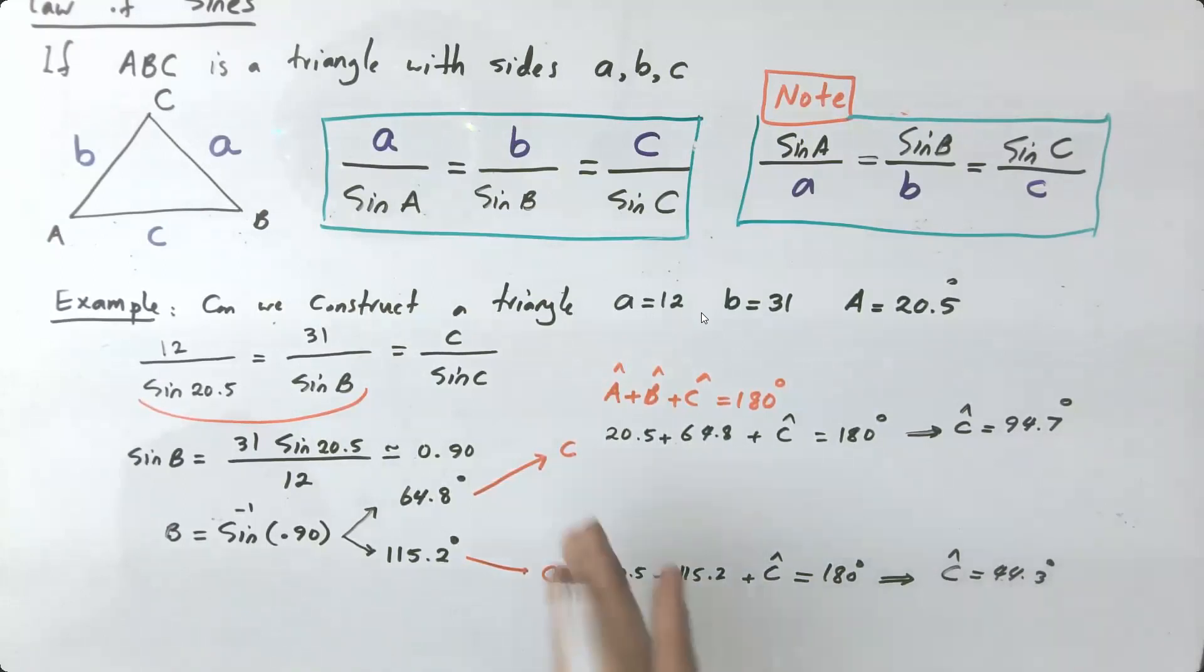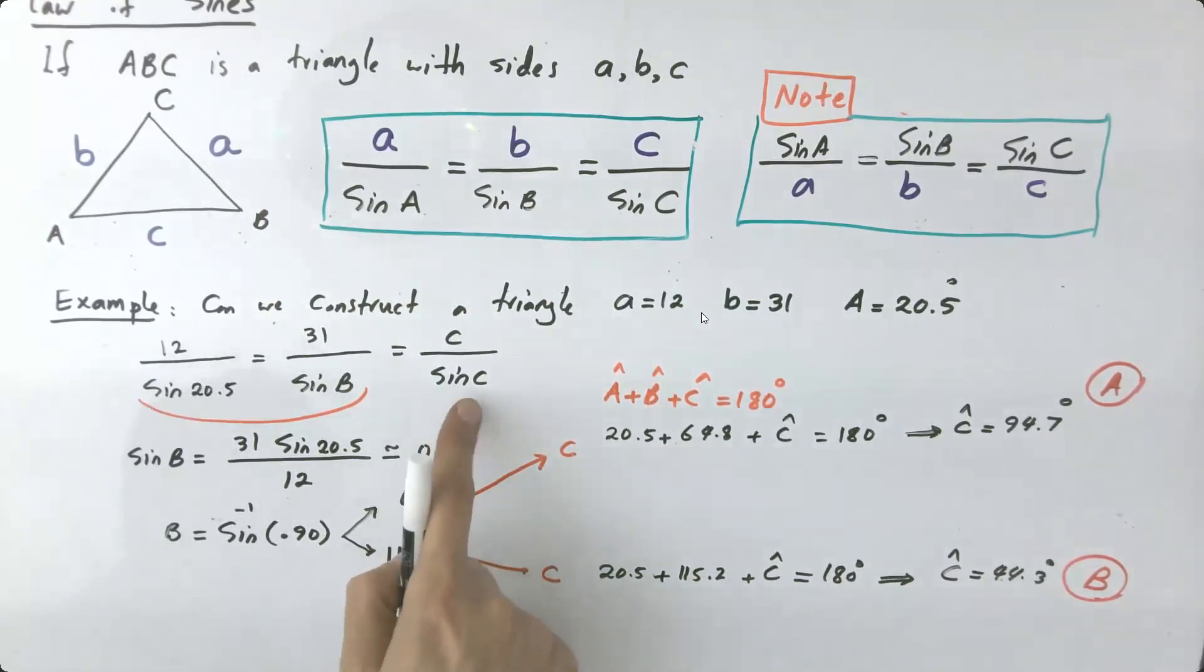Okay, what does it tell me? It tells me, hey, instead of having just one triangle, I end up with two triangles. This is my first triangle, triangle A, and this is my second triangle, triangle B. Okay, very good. So far, I computed my missing angle C. Now I need to find the side C.